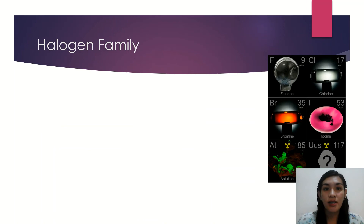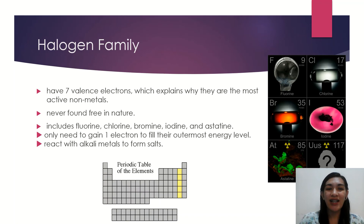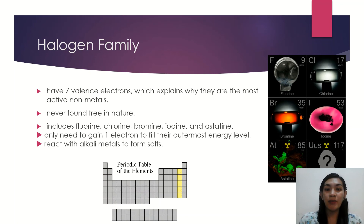Now, we have the halogen family. They have seven valence electrons, which explains why they are the most active non-metals — they want to bond with other elements because they are lacking one valence electron to become stable. The family includes fluorine, chlorine, bromine, iodine, and astatine. They only need to gain one electron to fill their outermost energy level. Usually, they react with alkali metals to form salts.